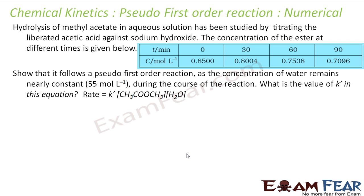We will apply all the formulas linked to first-order reaction in this case, because since the concentration of water is so much, this is behaving as a first-order reaction. Let's take one numerical. Hydrolysis of methyl acetate in aqueous solution has been studied by titrating the liberated acetic acid against sodium hydroxide. The concentration of ester at different times is given below. Show that it follows the pseudo first-order reaction as the concentration of water remains nearly 55 moles per liter during the course of reaction. What is the value of K dash in this reaction?